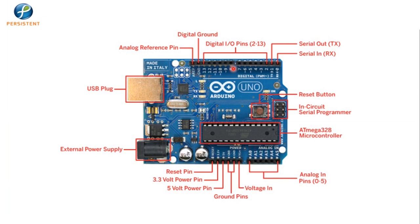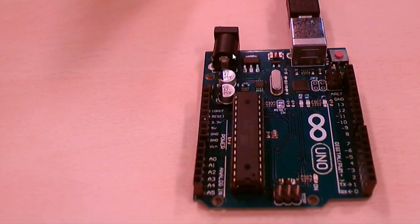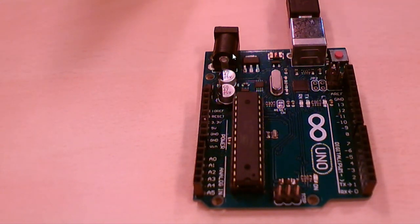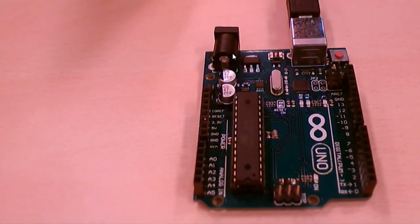It would be interesting to see the actual hardware so that you are connected to what we are trying to learn. Let us quickly have a look at the actual hardware board of Arduino Uno. This is the Arduino Uno board that we will be talking about in detail. Let us come back to the slide first and then we will try to understand each and every component on this board.